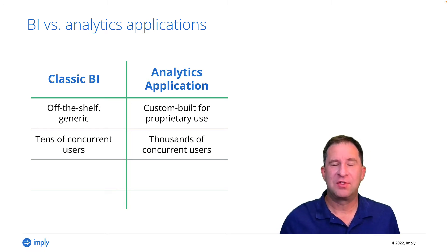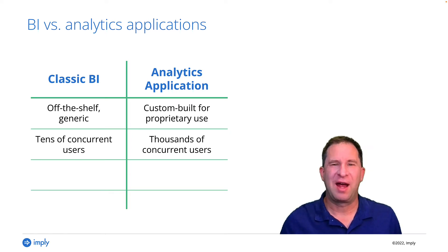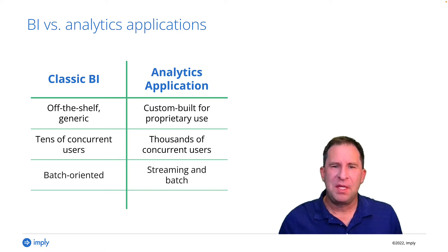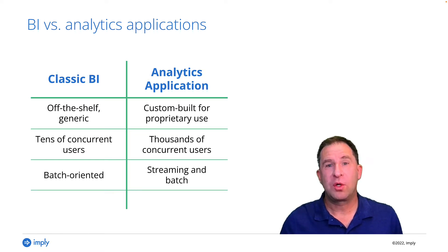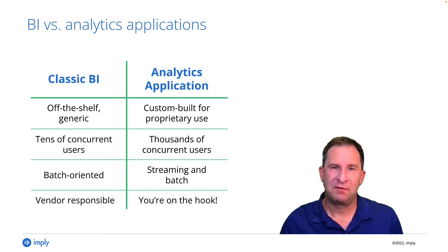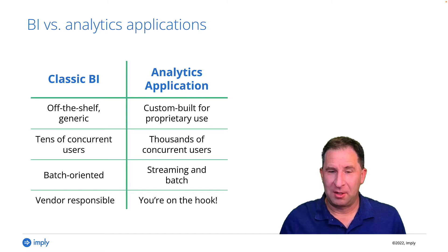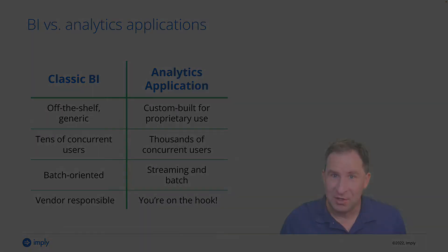BI is used by maybe a dozen users concurrently, while an application could have thousands. BI is more focused on historical data that are loaded in batches; apps need this too, but also must have real-time or streaming data. And finally, if a BI solution doesn't work well, you can blame the vendor for it. If an application doesn't work, though, the one on the hook is the developer — probably your colleague, or maybe even you.